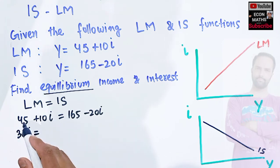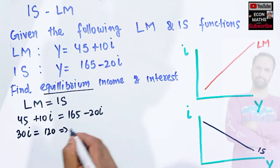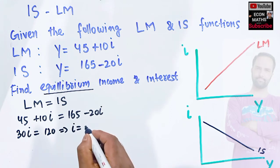is equal to 165 - 45, which comes out to be 120, which gives us i = 120/30, which comes out to be 4.